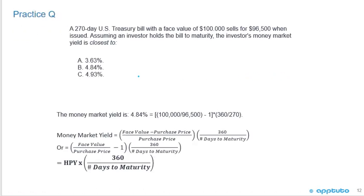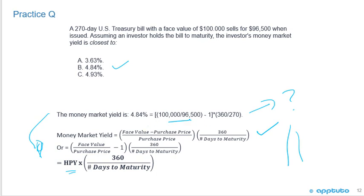The correct answer is B, 4.84%. The money market yield formula is: (face value minus purchase price) over purchase price, times 360 over number of days to maturity. Sometimes the solution is written as a shortcut — face value over purchase price minus 1, times 360 over days to maturity — which is just the holding period yield times 360 over days to maturity. Different strokes for different folks.